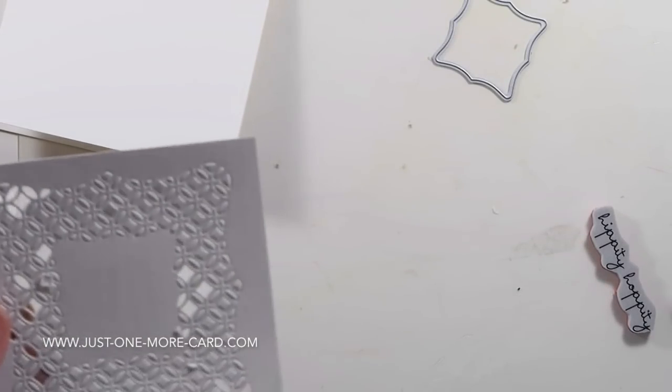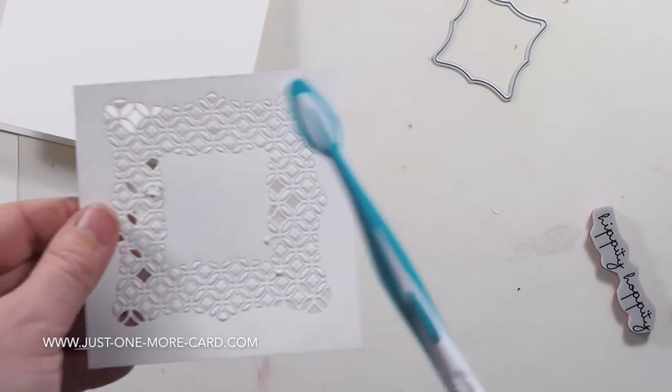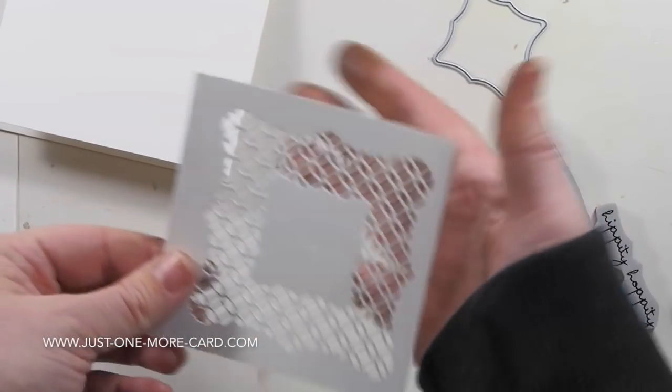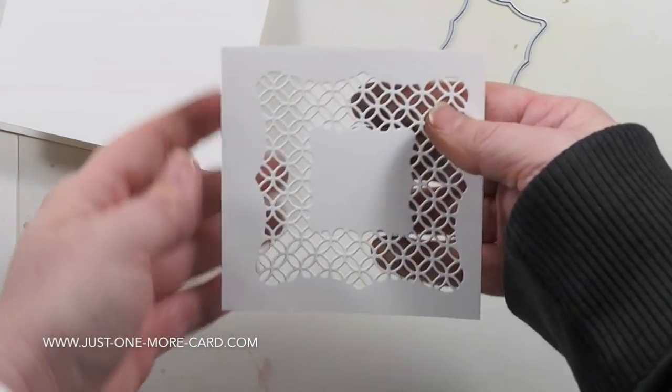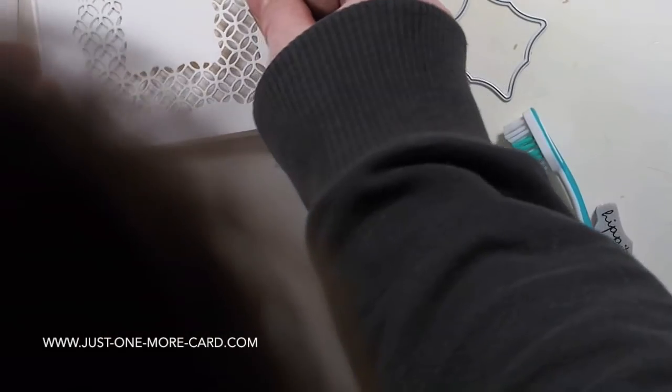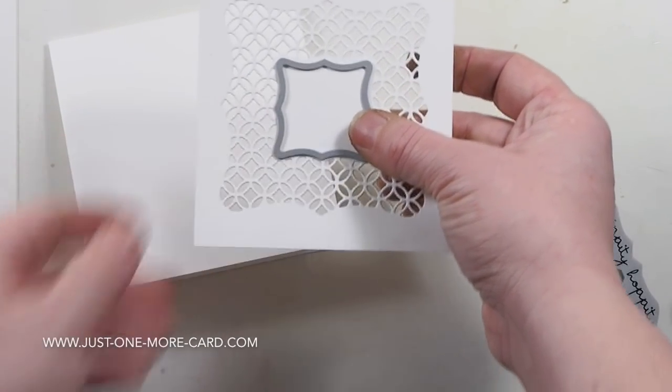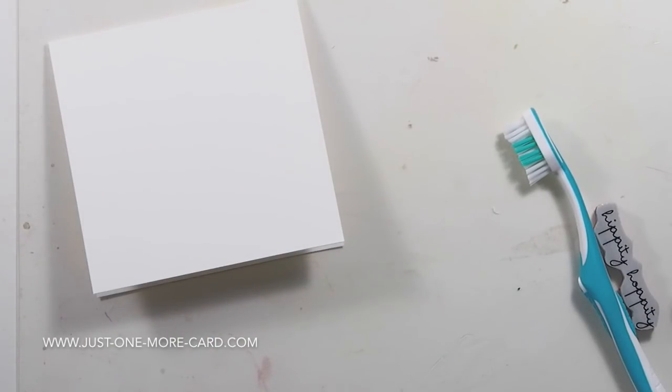Now I have die cut it and you can see there's a lot of pieces still in there. So how do you get them out? I found that if you use a toothbrush, it works rather well actually. So that's basically what I'm doing—used my toothbrush, it's a very soft toothbrush, and I got everything out. It also works to get the stuff out of your die, by the way.